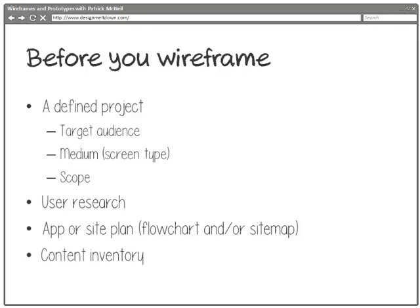We most likely need to have some sort of content inventory — basically a documentation or collection of all the content that's going to be in our application or website. That's what we're going to be designing around. If you're going to wireframe something, you've got to know the pieces that are going into it. With the flowchart or sitemap we should have a view of all the screens or pages; with the content inventory we know what goes into those pages. We should also have clear requirements — what features it's supposed to do, what elements or actions users should be able to take.